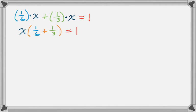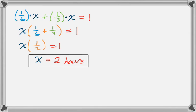Now I'm going to combine those fractions. So one-sixth plus one-third is two-sixths. So one-sixth plus two-sixths is three-sixths, which is one-half. So X times one-half equals one. Now I'm going to multiply both sides by two, or divide by one-half, however you want to look at it. So I get X equals two hours, and that's how I would solve the problem.